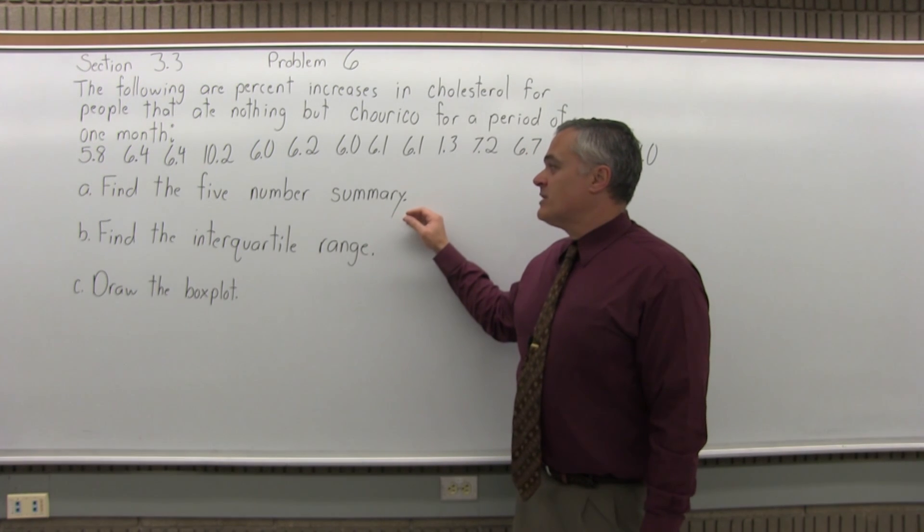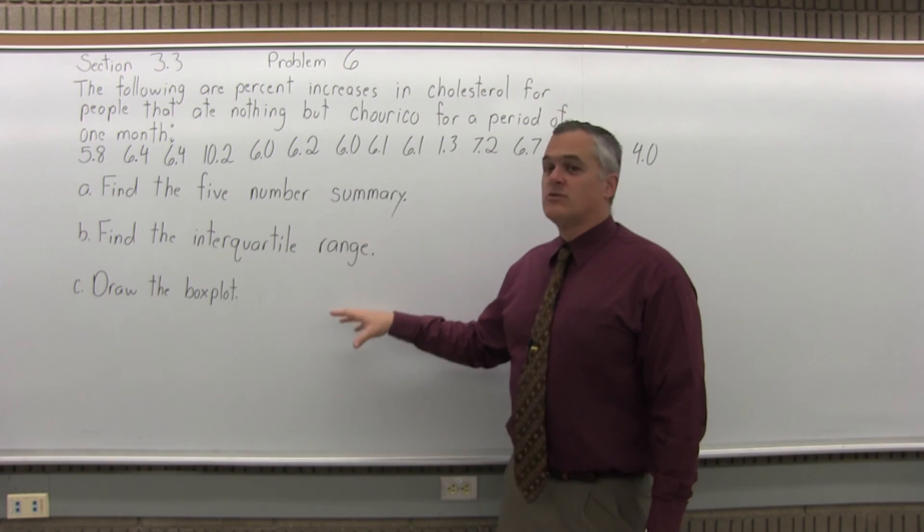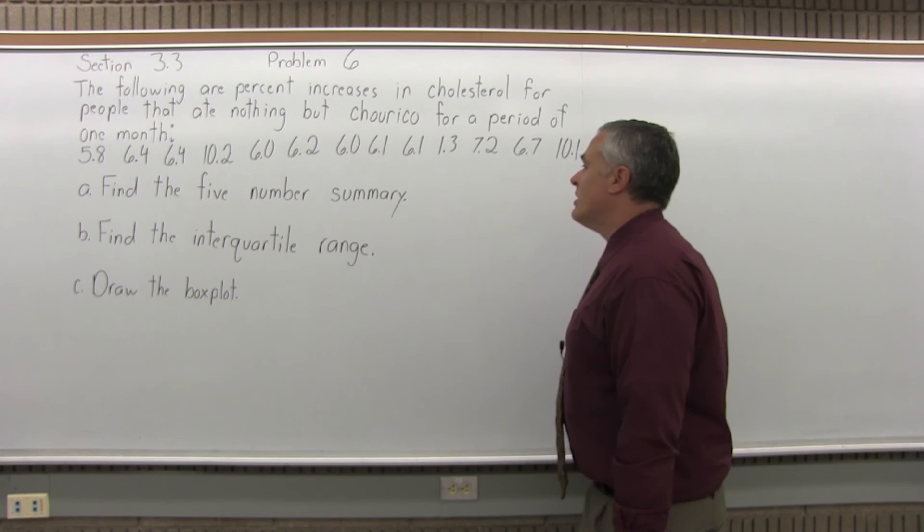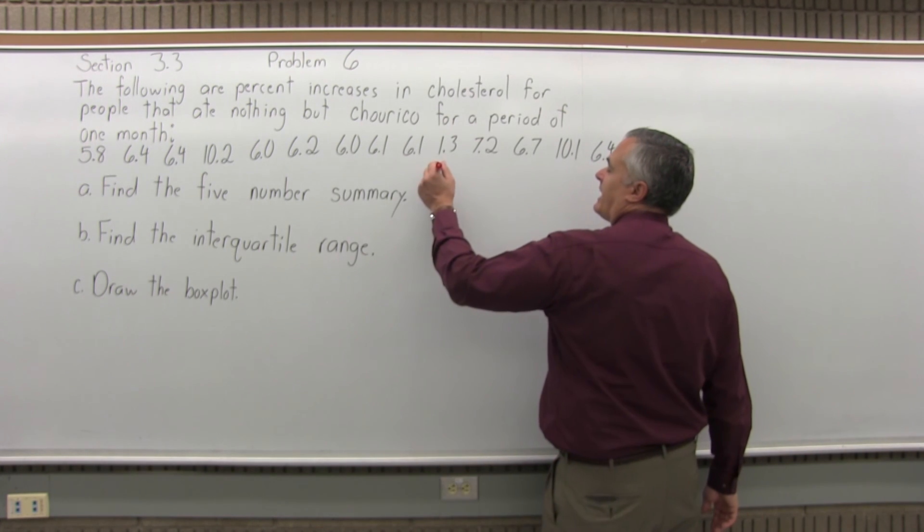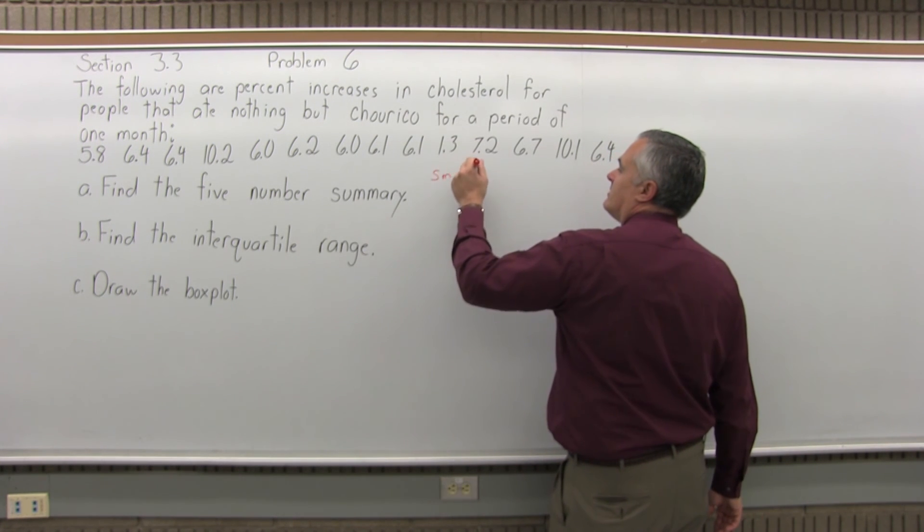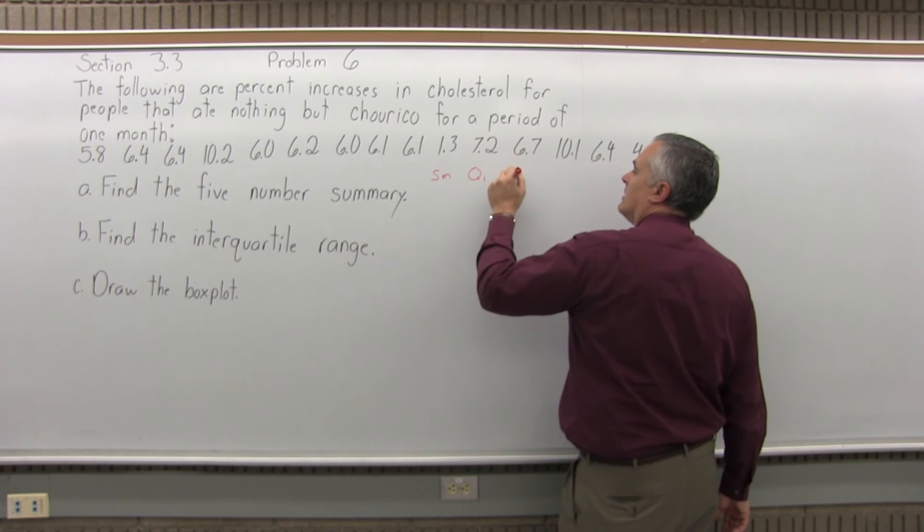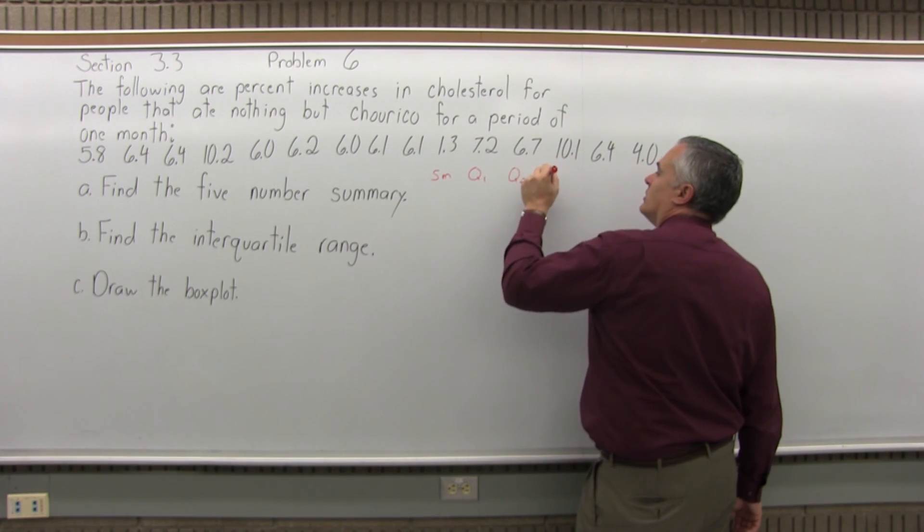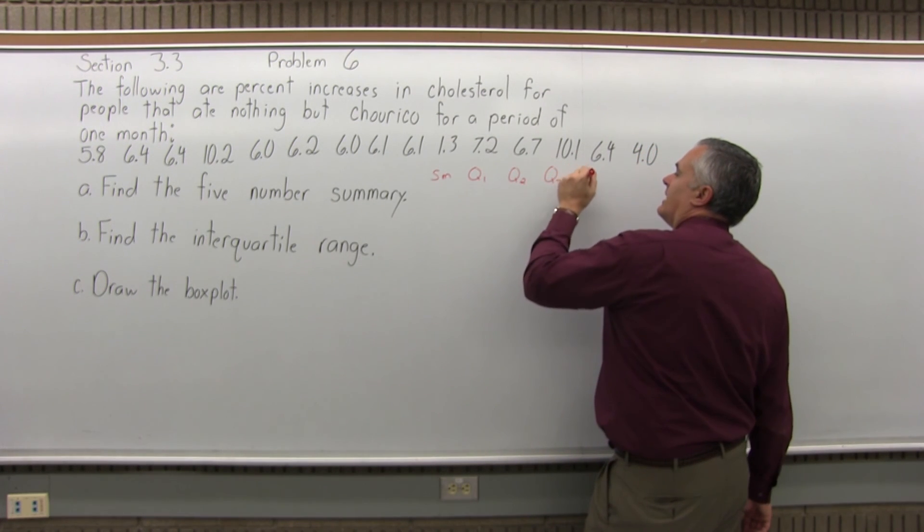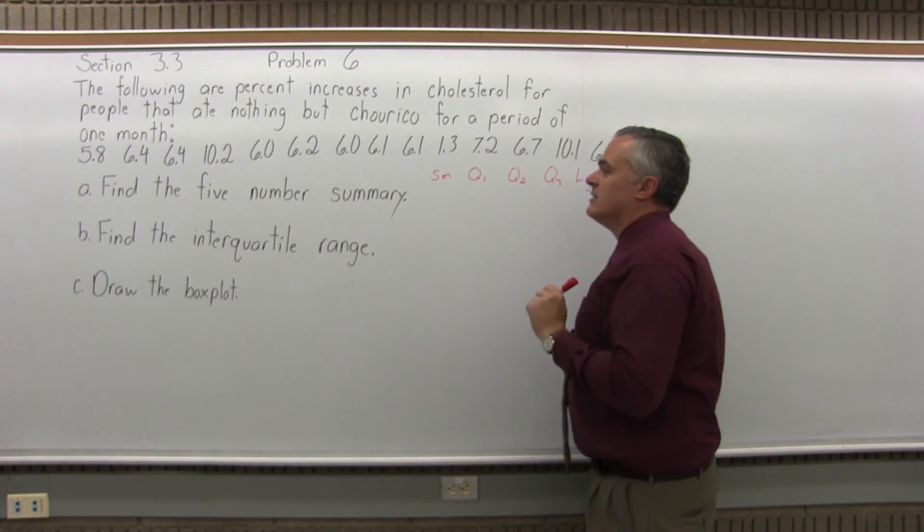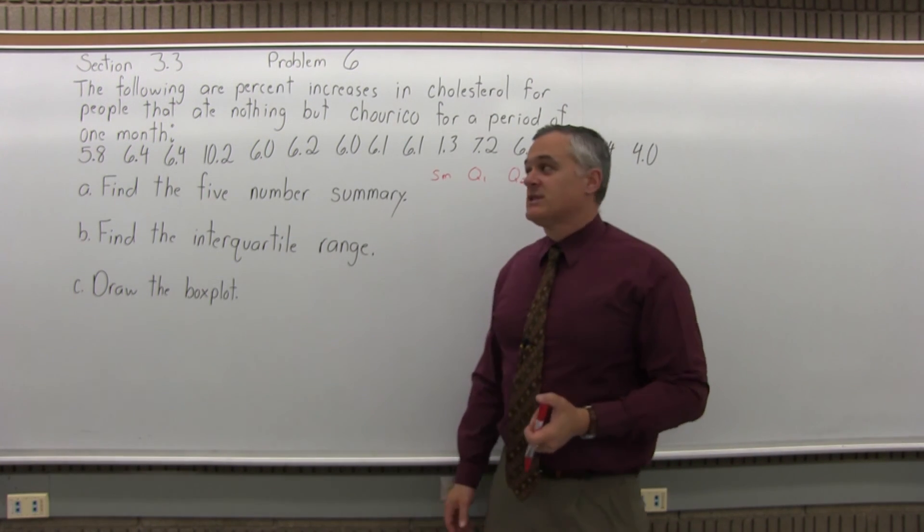Find the five number summary, find the interquartile range, and draw the box plot. For the five number summary, I have to find the smallest data value, Q1, Q2, Q3, and the largest data value. Now to do that, I'm going to have to put this list in order.